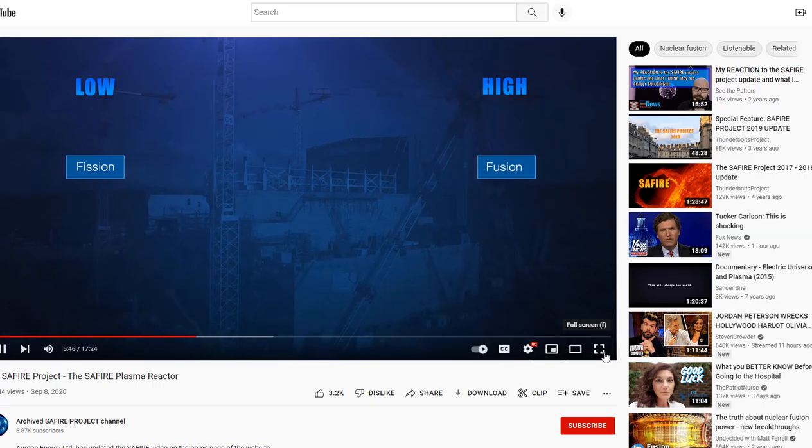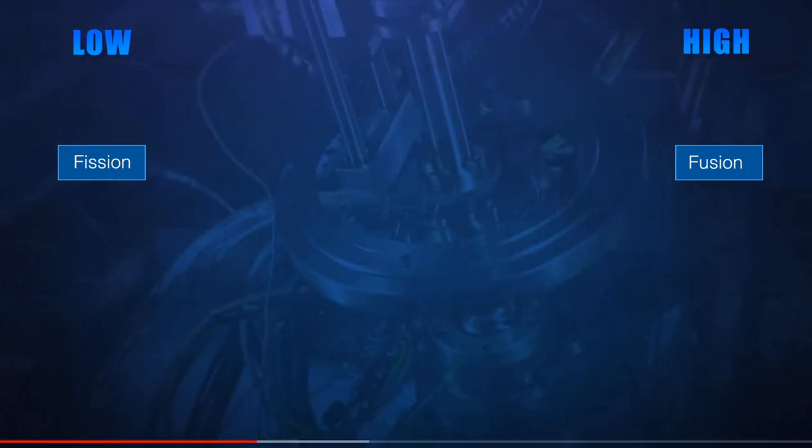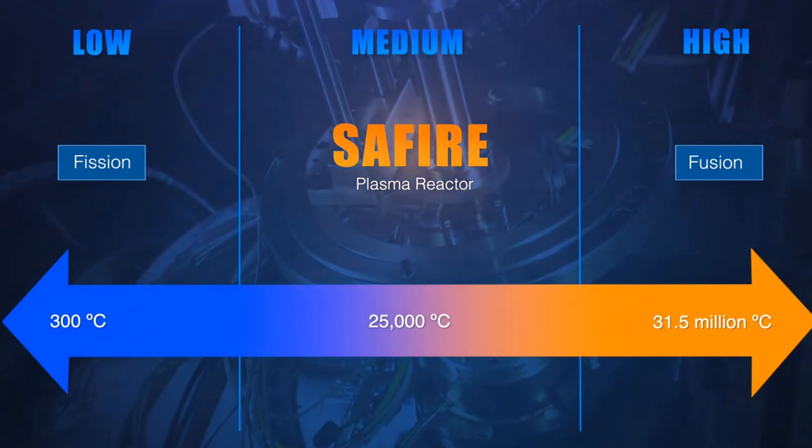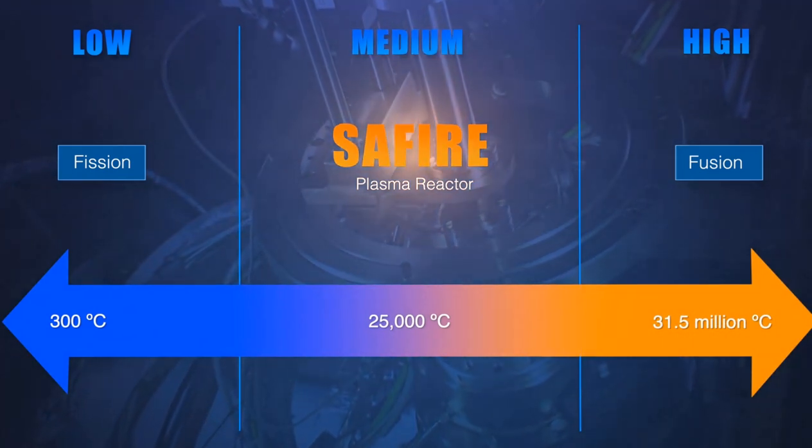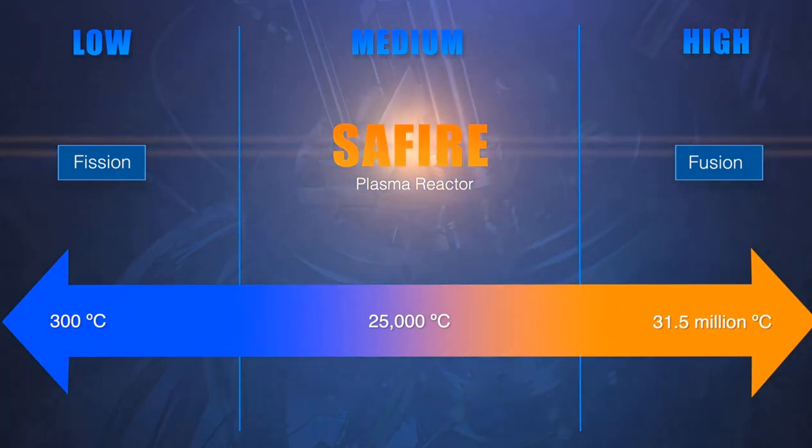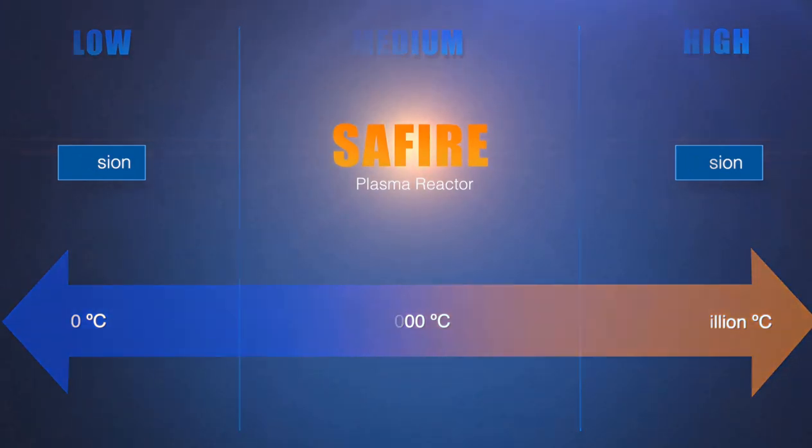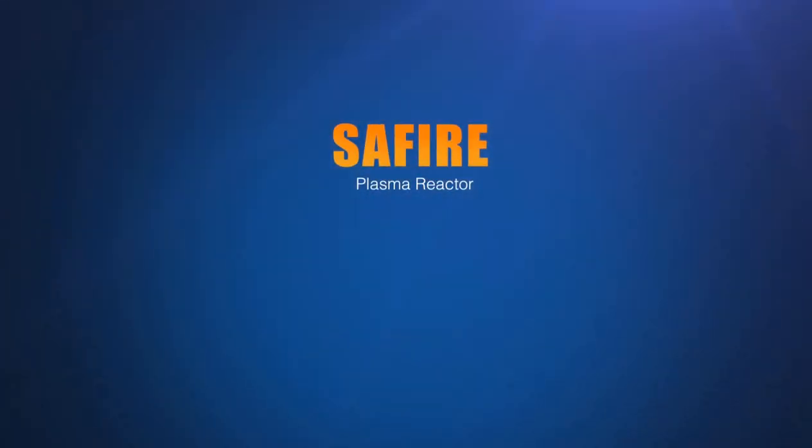Inherently unstable and not yet producing electricity. Sapphire is a medium-temperature plasma reactor currently producing a controllable stable plasma which can be generated at will and run continuously over extended periods of time.